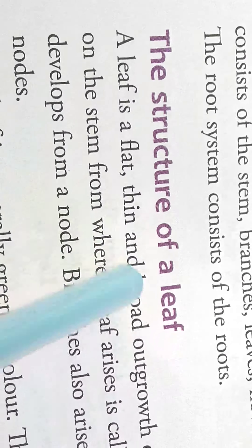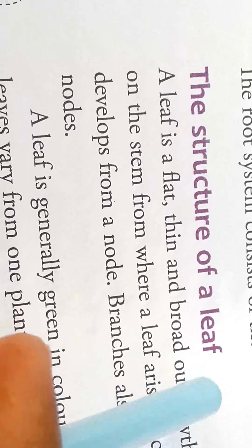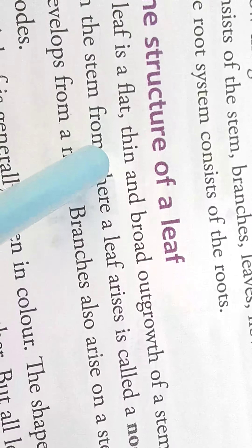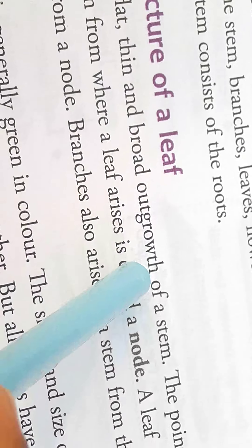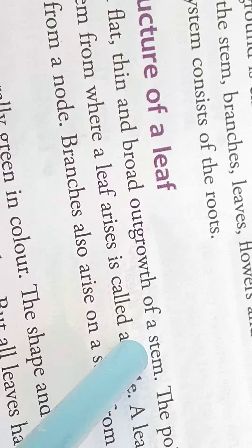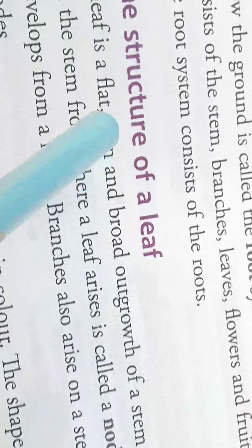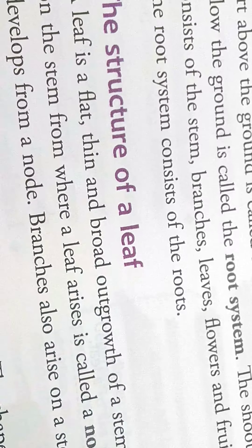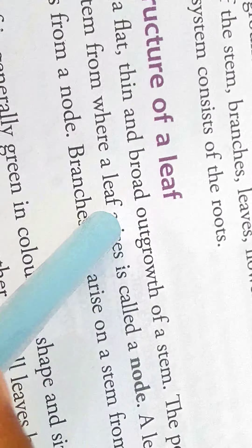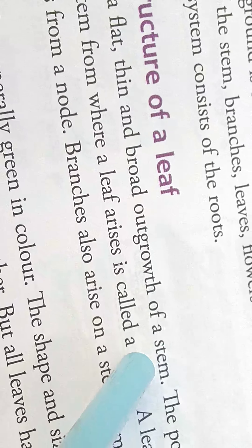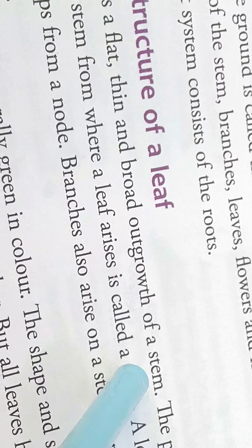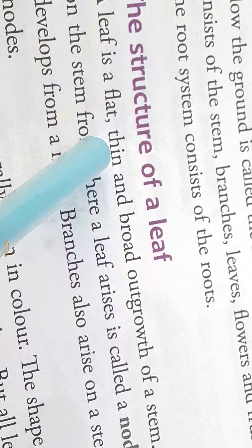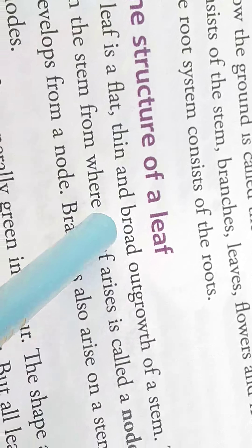The structure of a leaf. A leaf is a flat, thin and broad outgrowth of the stem. Normally a leaf is one type of outgrowth of the stem, and it looks flat, thin and broad.